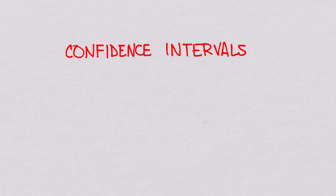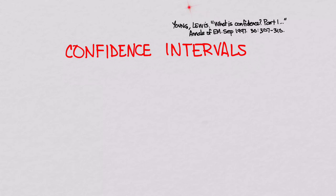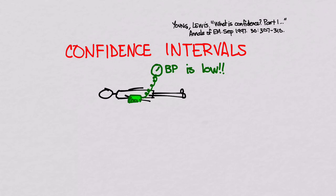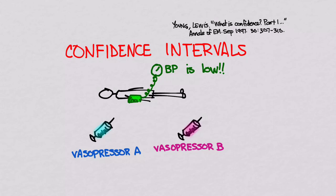In this video, we're going to talk about confidence intervals and exactly how we should interpret them. Let's say that we have a patient who is not doing so well and their blood pressure is low. We want to try giving them a drug to raise that blood pressure. We have two choices: vasopressor A and vasopressor B, and we want to determine which one is better.